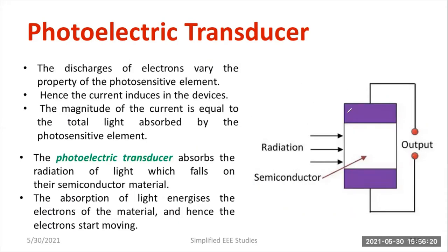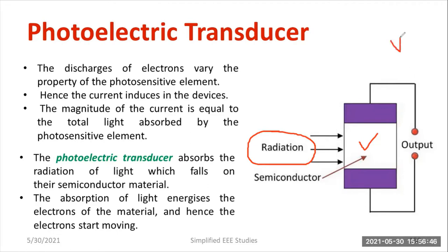I will show you a typical diagram of photoelectric transducers. It is made up of photo-sensitive elements, normally made up of semi-conducting material with a coating of photo-sensitive element. Whenever radiation falls over the material, electrical output will be generated. It may be either voltage, current, or in the form of resistance. This will be observed in the case of photoelectric transducers.